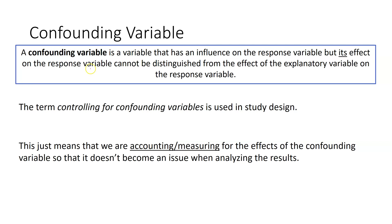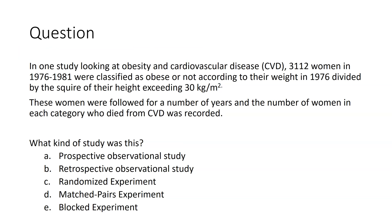This is why we cannot make causal conclusions that the explanatory variable is causing changes in the response — because in an observational study, we can control for some confounding variables but certainly not all of them. Experiments offer additional control, and that's where we're able to make those causal conclusions.